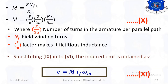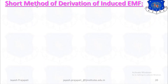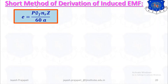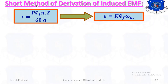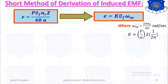In short, the derivation of induced EMF proceeds as follows. Starting from E equals P·Φf·NR·Z divided by 60A, we rewrite it as E equals K·Φf·ωm, where K equals P·Z divided by 2π·A, and ωm equals 2π·NR divided by 60 radians per second.